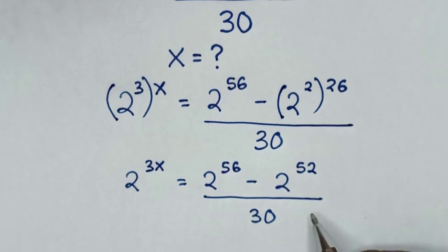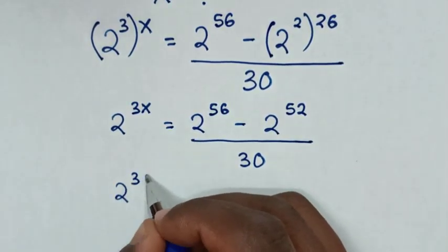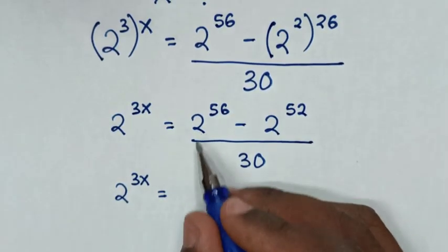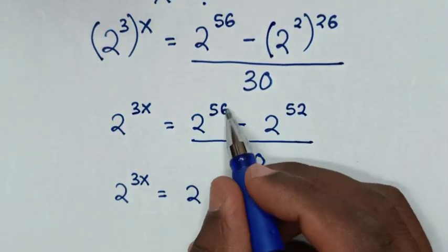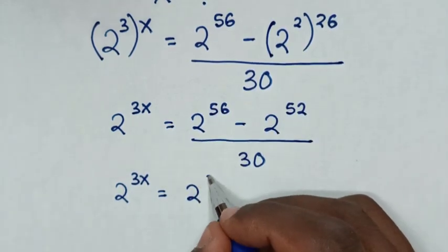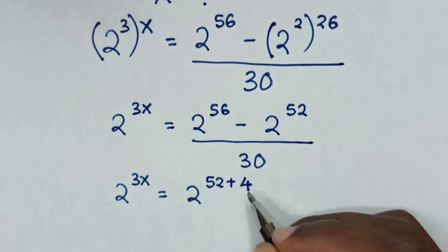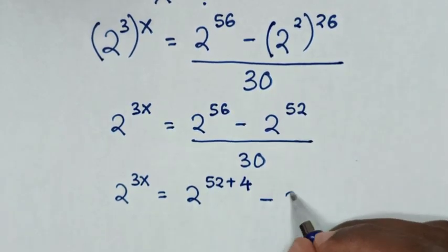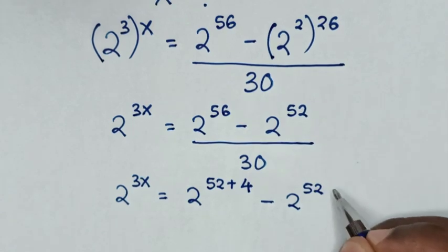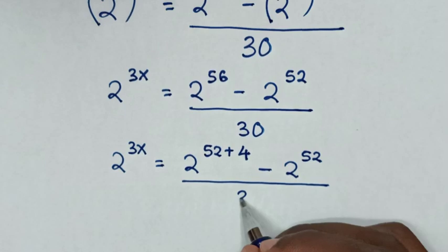Then in the next step, it will be 2 power 3x is equal to 2 power 56. To have a common power of 52, this is the same as power of 52 plus 4, then minus this 2 power of 52, then over 30.